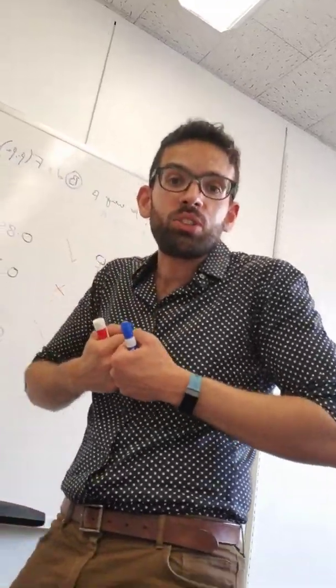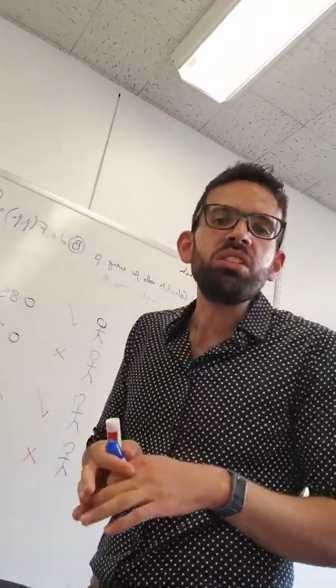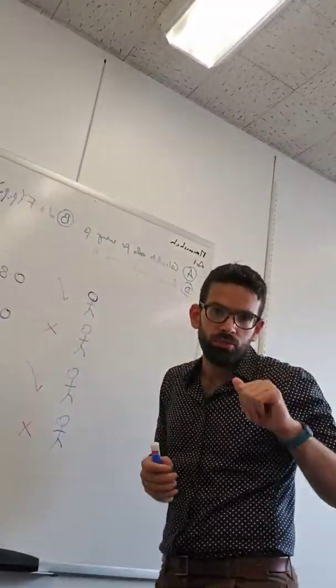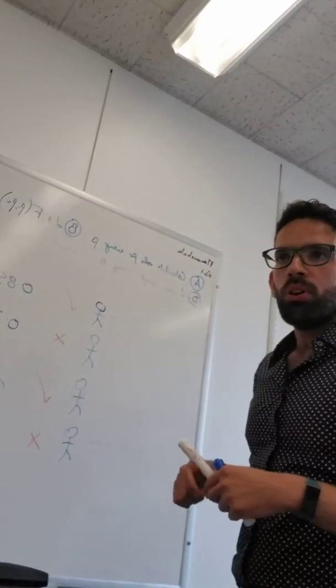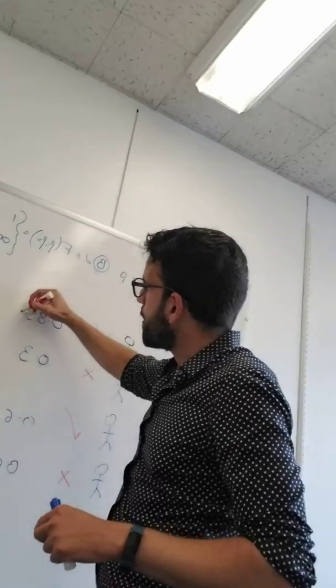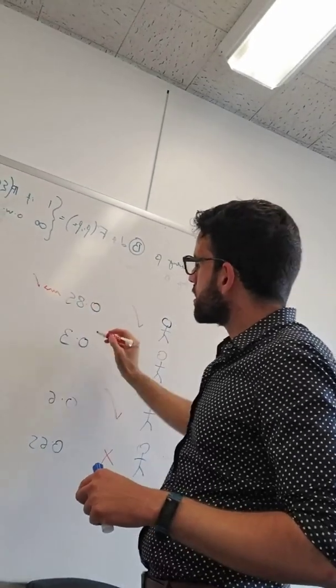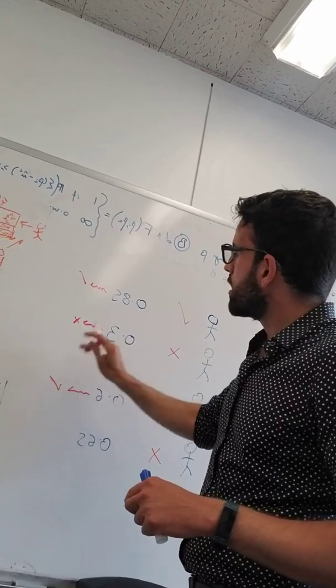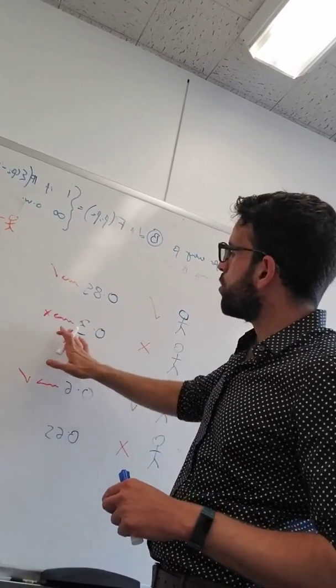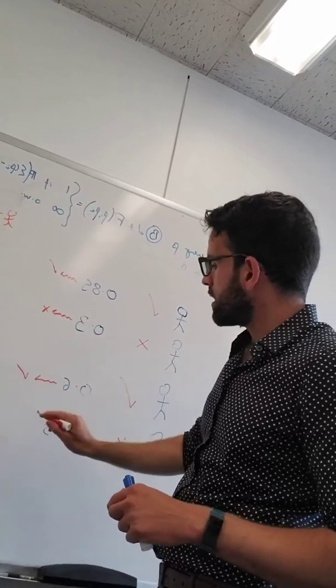The first measure Professor Dahan told you about is accuracy. Accuracy is the most obvious measure you could think of. You would say, well, if this number is above 0.5, then your model's prediction is a yes. If it's below 0.5, you say your model's prediction is a no. In this case, 0.85, the prediction is a yes. 0.3, the prediction is a no. 0.6, it's a yes.